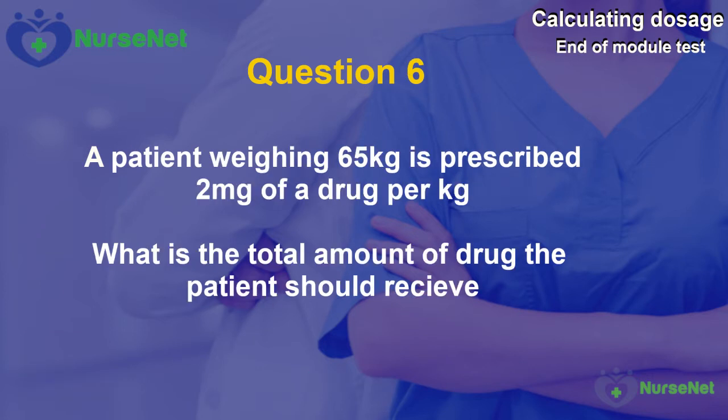Question 6. A patient weighing 65kg is prescribed 2mg of a drug per kilogram. What is the total amount of the drug the patient should receive?